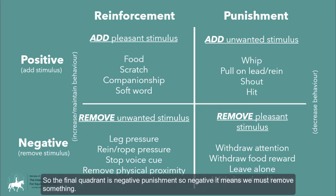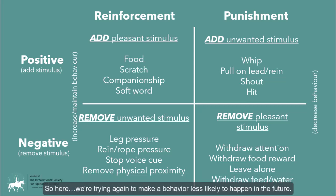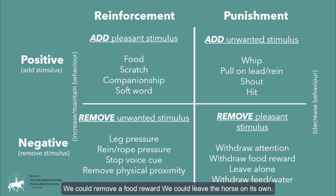The final quadrant is negative punishment. Negative means we must remove something, and we're again trying to make a behavior less likely in the future. Examples of what we might remove include withdrawing attention, removing a food reward, leaving the horse on its own, or removing food or water from the horse.